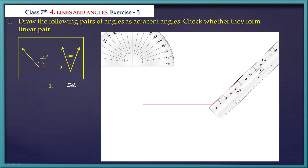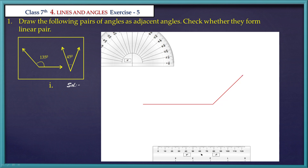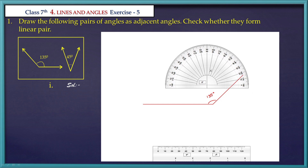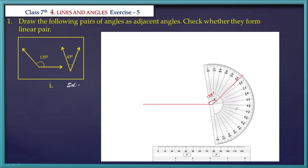Now we have to draw 45 degrees as adjacent angle. We have to place the protractor. We have to draw 45 degrees as adjacent angle to this. This angle's right arm is the reference — the protractor 0 degree angle is coincided with it.